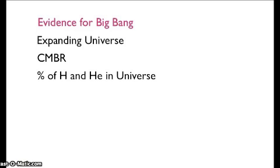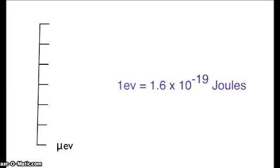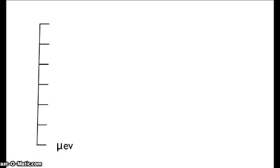But can we know any more? Can we create the conditions at the Big Bang? Let us for a moment create an energy chart. We shall use a logarithmic scale, which means that each step in the chart will be 1,000 times bigger than the previous point. We start with a microelectron volt. An electron volt is a unit of energy which is equivalent to 1.6 times 10 to the minus 19 joules.